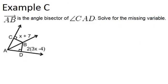AB is the angle bisector of angle CAD. Solve for the missing variable. So because AB is the angle bisector, it means that point B must be equidistant from AD and from AC.